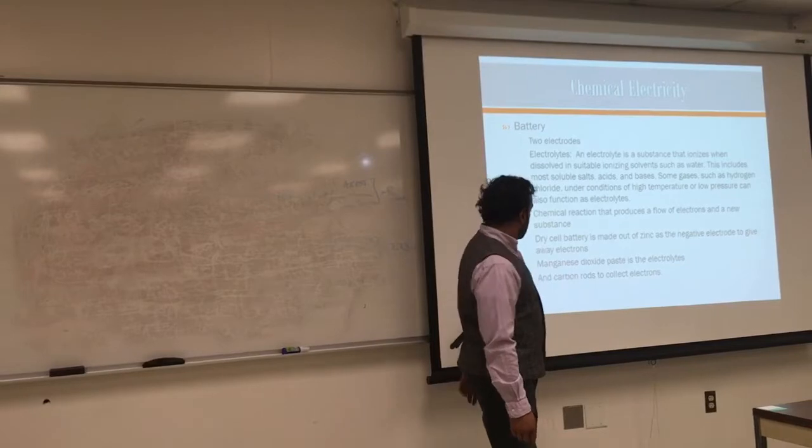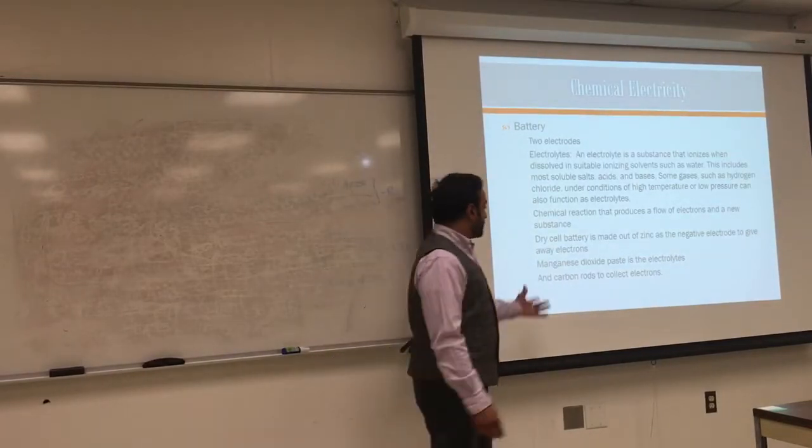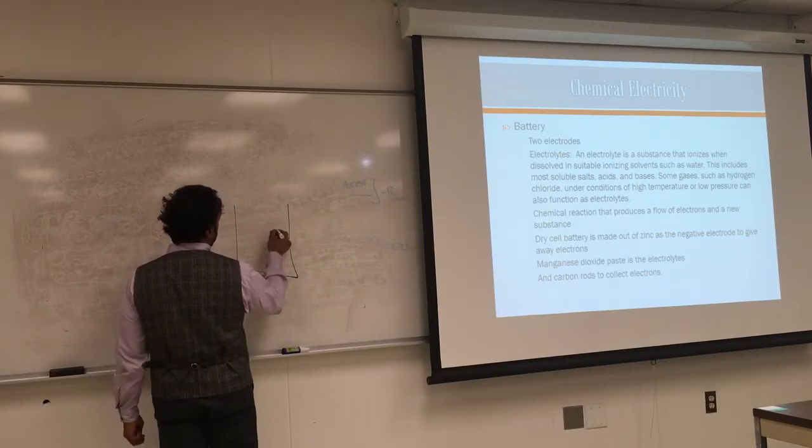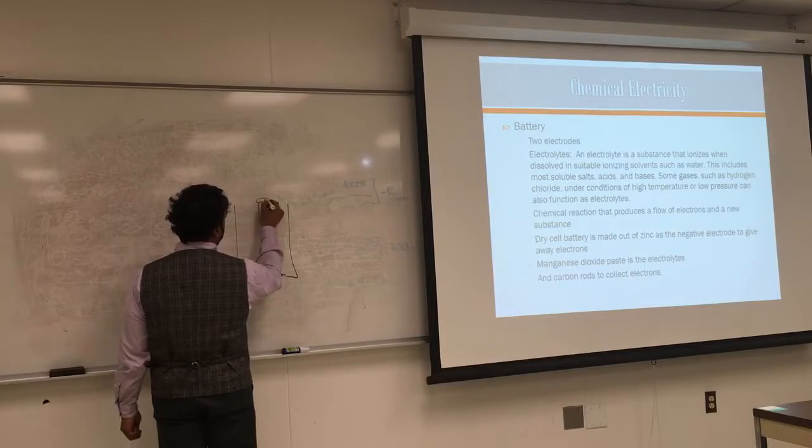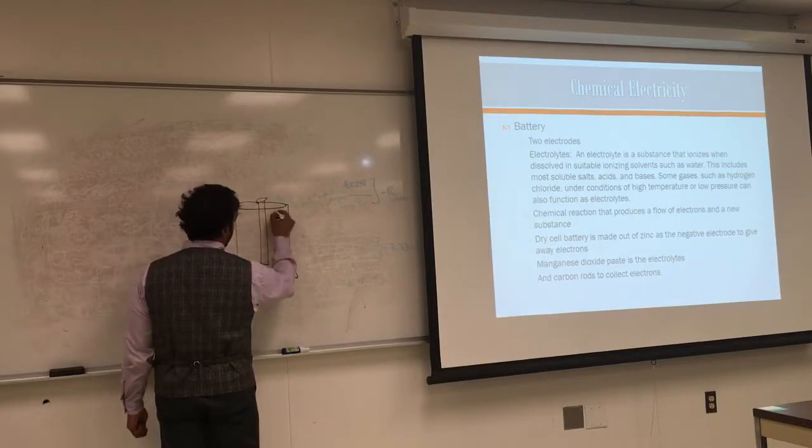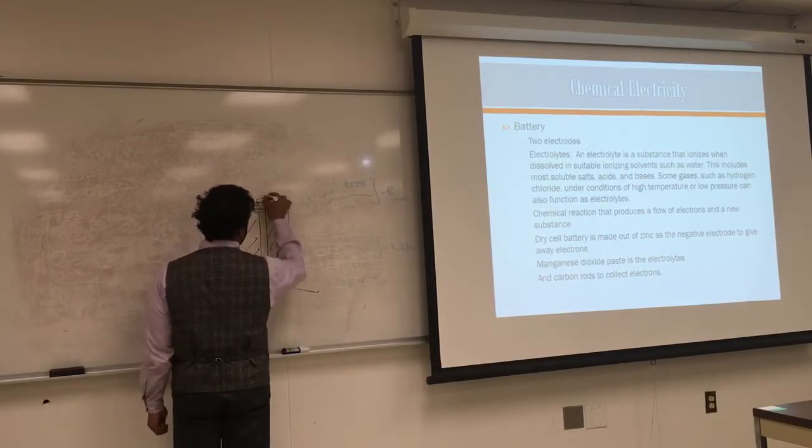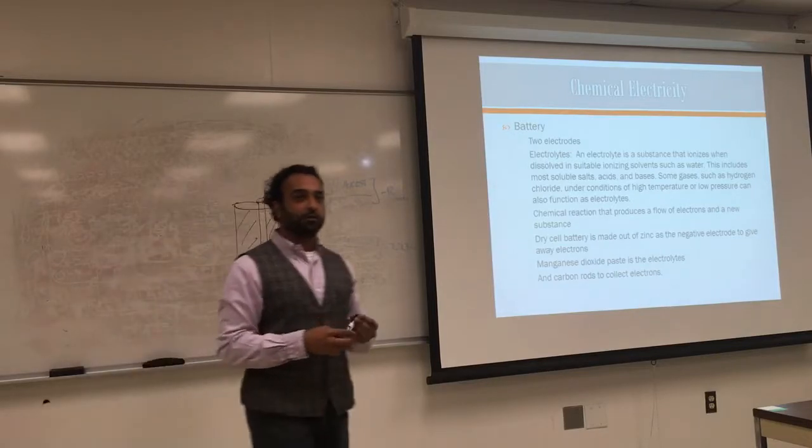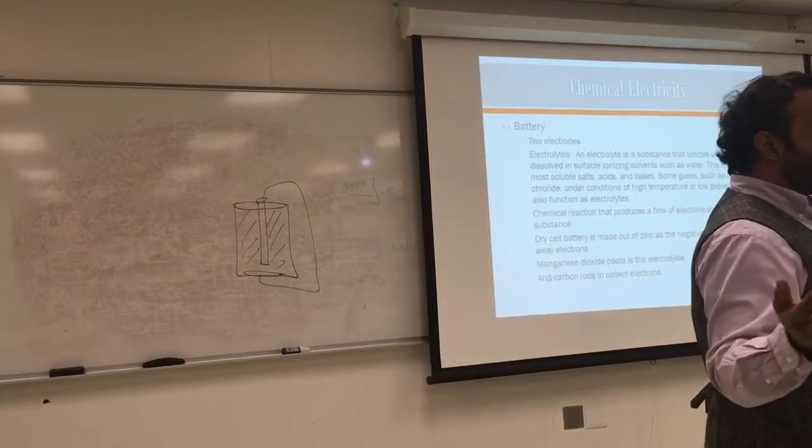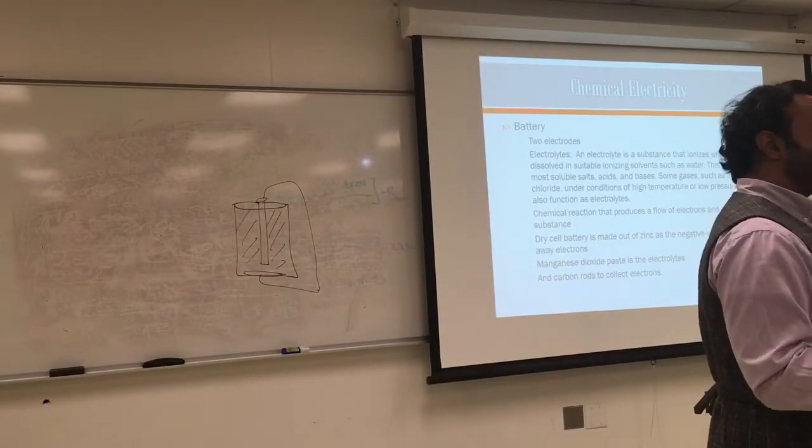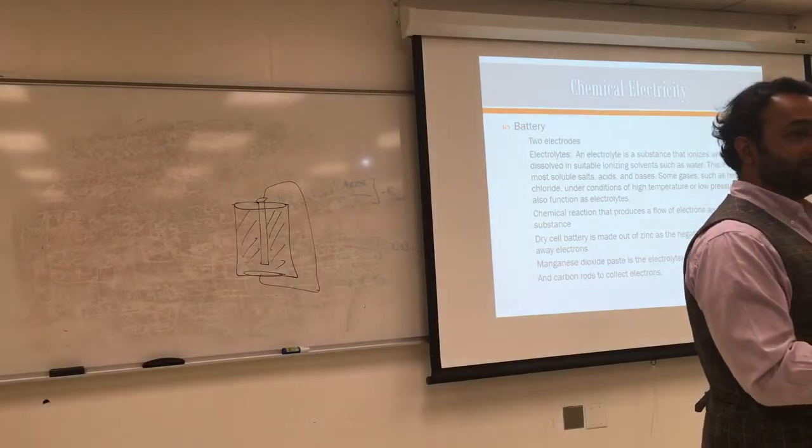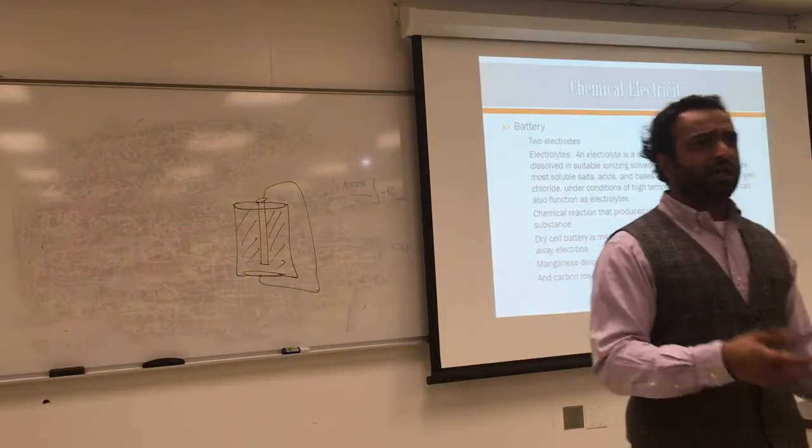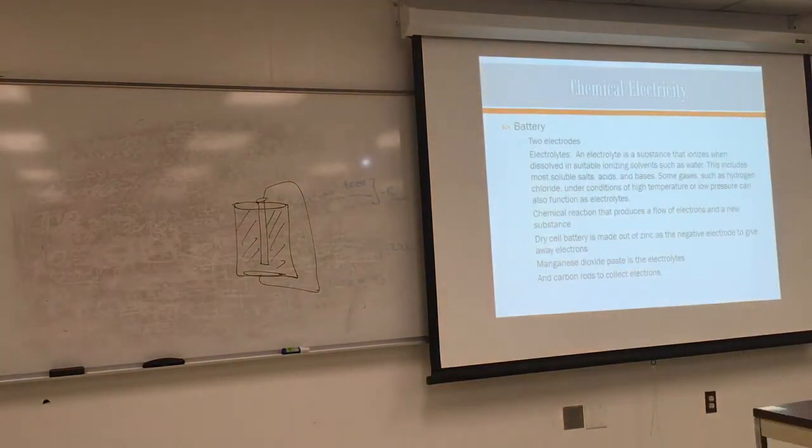Dry cell batteries are made out of zinc as an electrode which gives away electrons. There's also manganese dioxide, carbon rods. We have a paste here, a rod, this is our battery. Once you connect those two, you have a connection and the materials start to dissolve and decompose. Once you react all the stuff, the battery is gone. Rechargeable batteries, we can put electricity and reverse the reaction, and you get the original material.